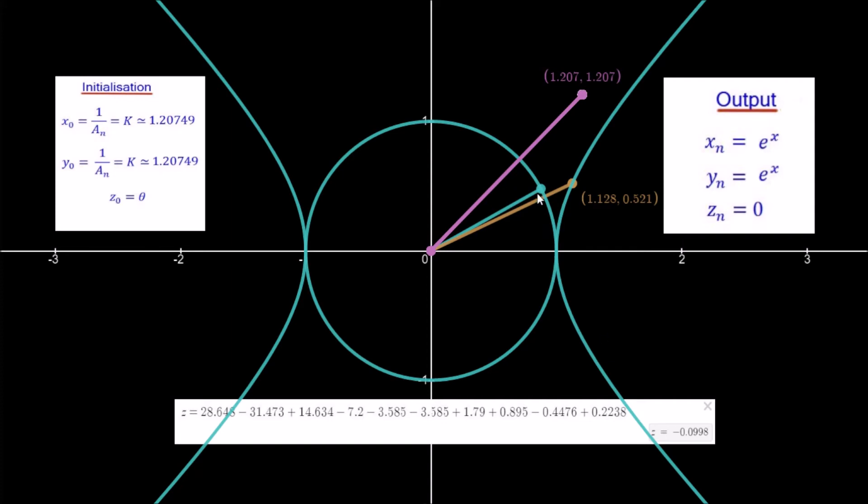Now we're going to use rotation mode. We want the angle to tend towards 0, so we're going to add and subtract the values for hyperbolic mode in order to reach 0.